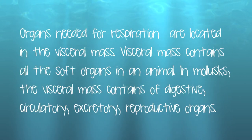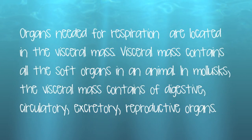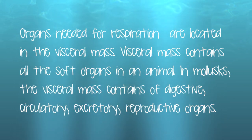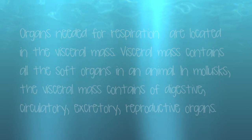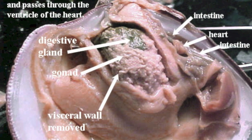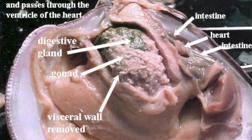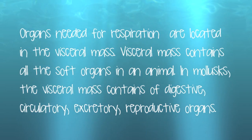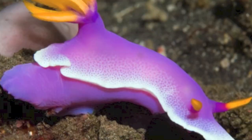Organs needed for respiration are located in the viscerial mass. The viscerial mass contains all soft organs in an animal. In mollusks, the viscerial mass consists of the digestive, circulatory, excretory, and reproductive organs.